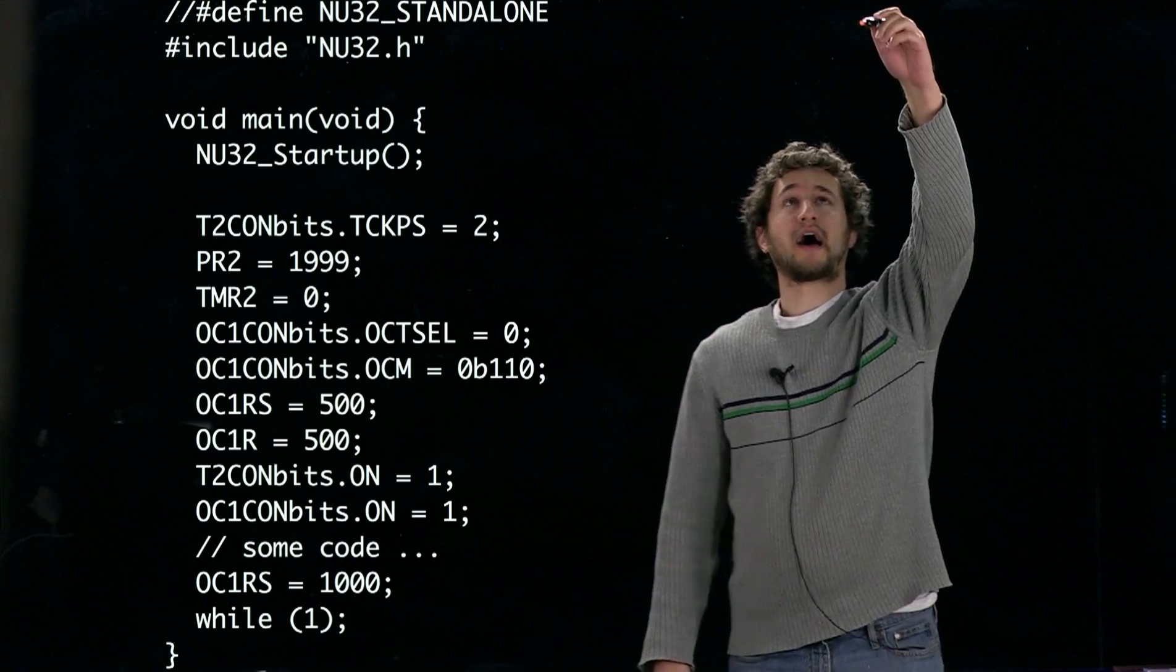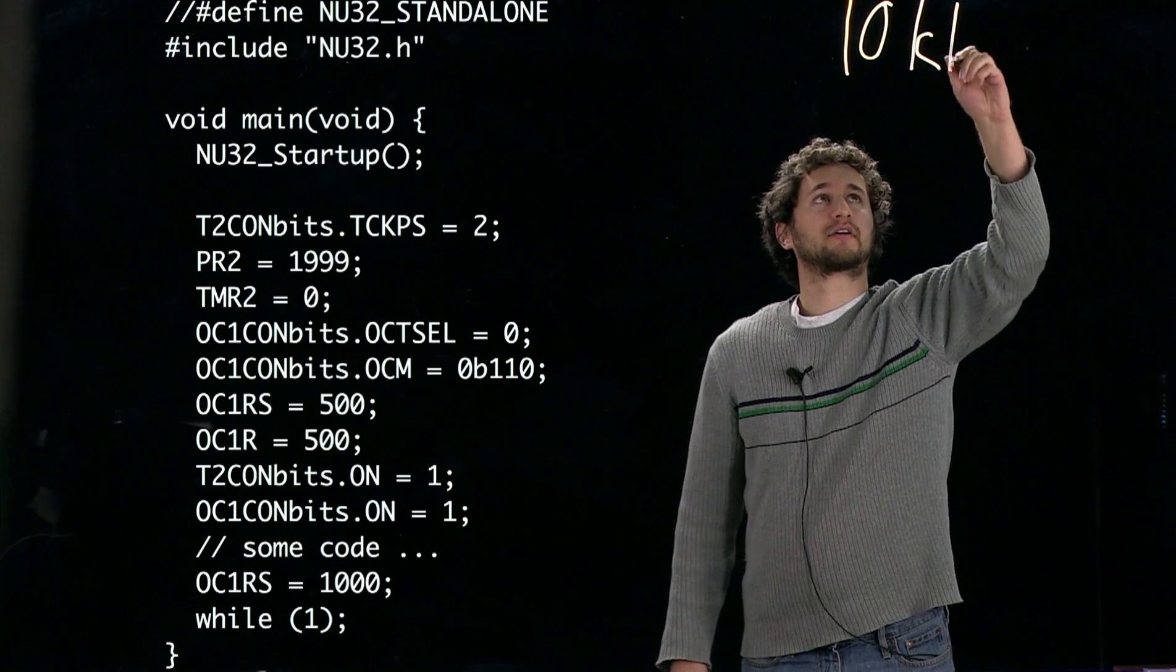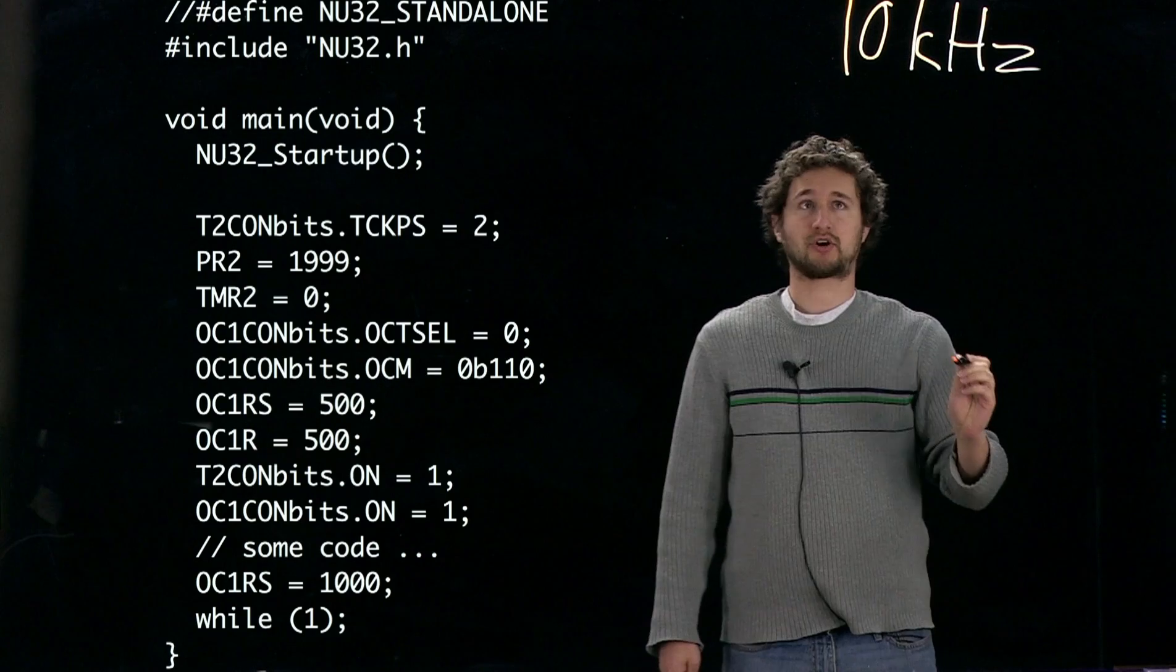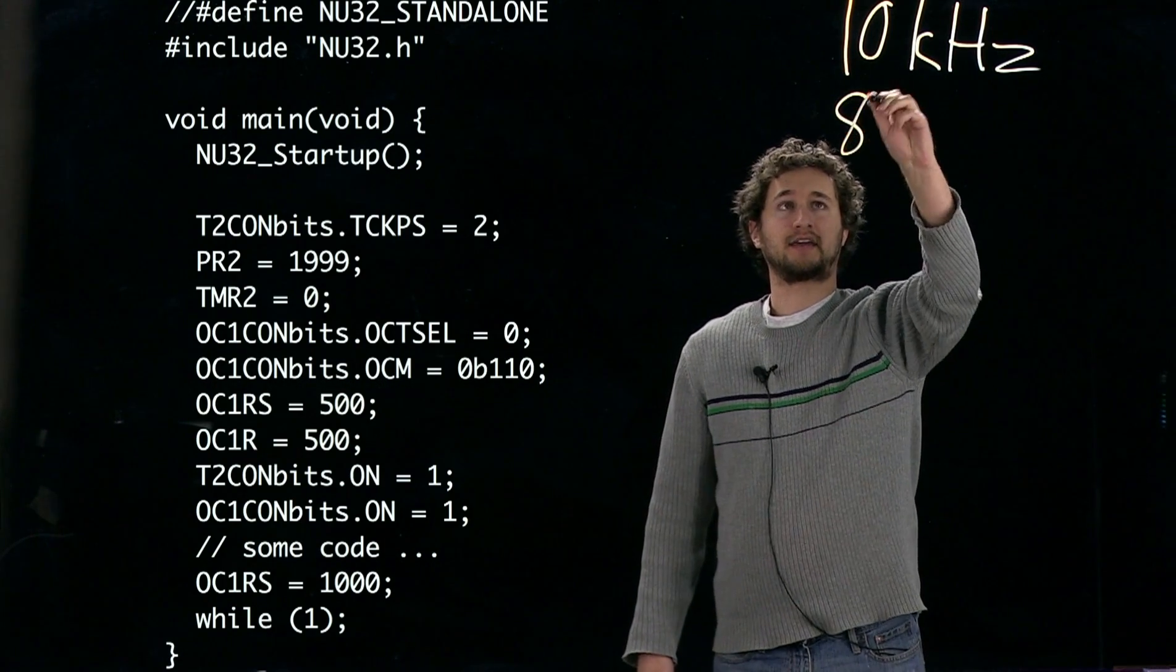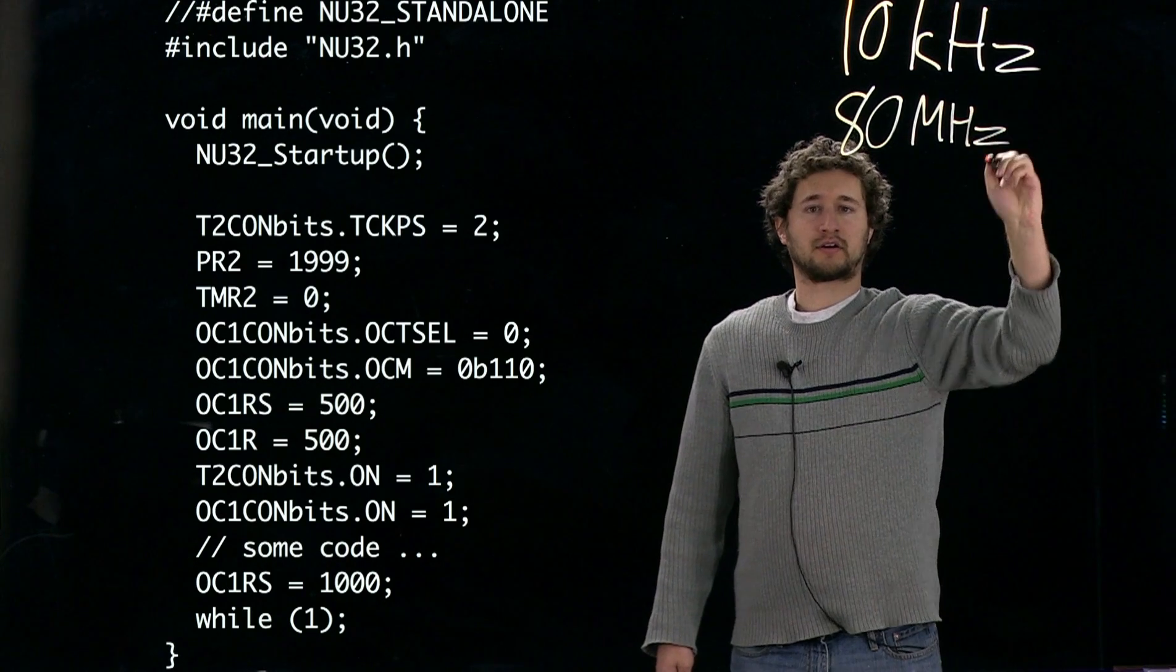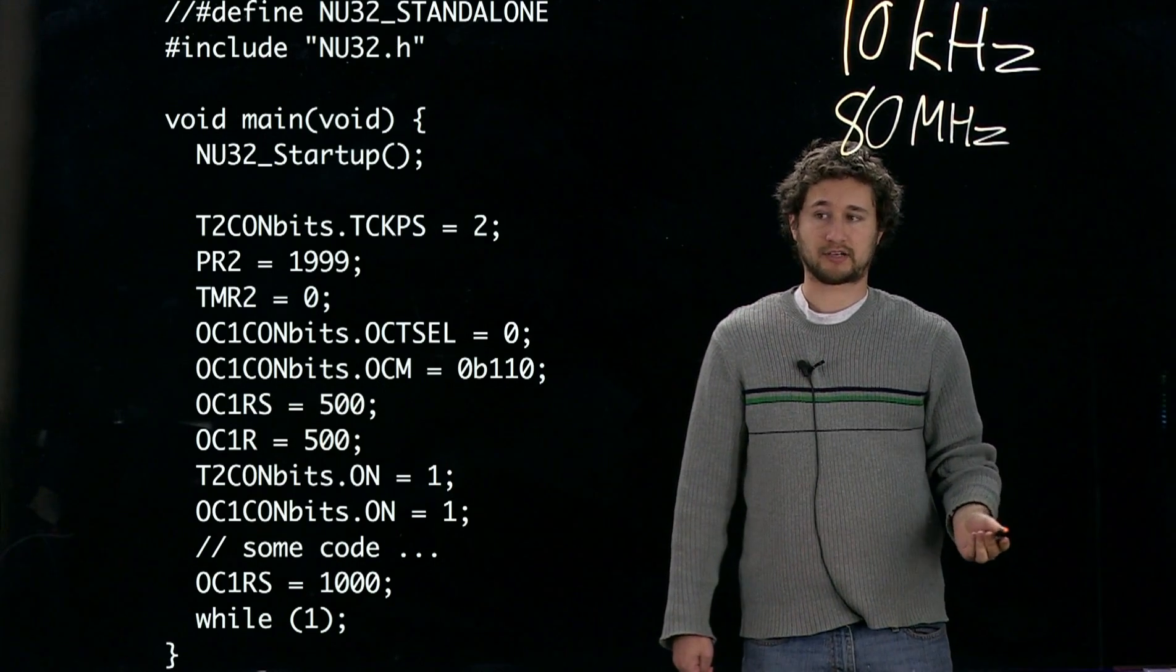Okay, today I'm going to show you how to set up a 10 kilohertz PWM signal. Remember that our peripheral bus clock is running at 80 megahertz. This is the speed at which timer 2 is going to be running at initially.